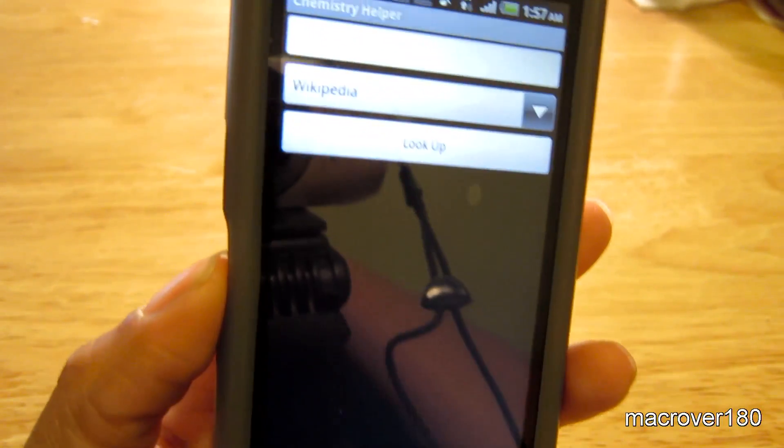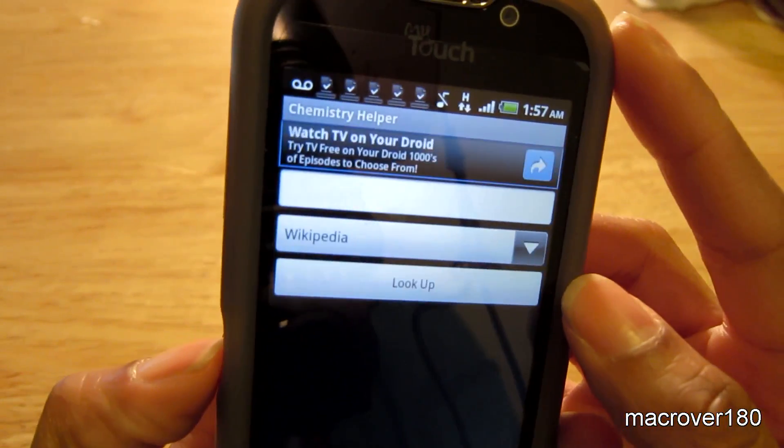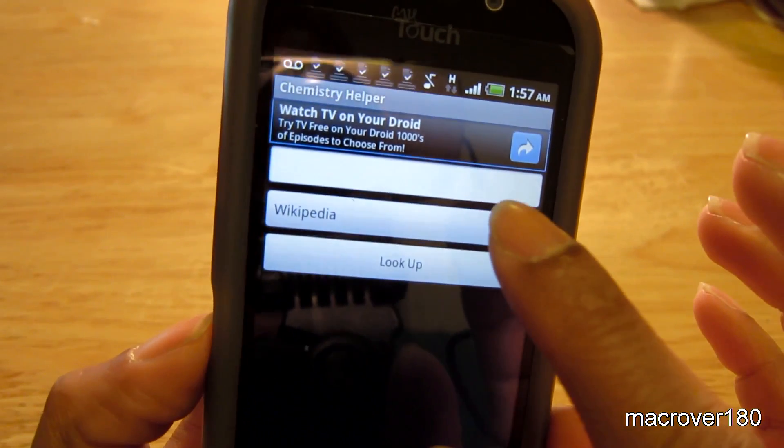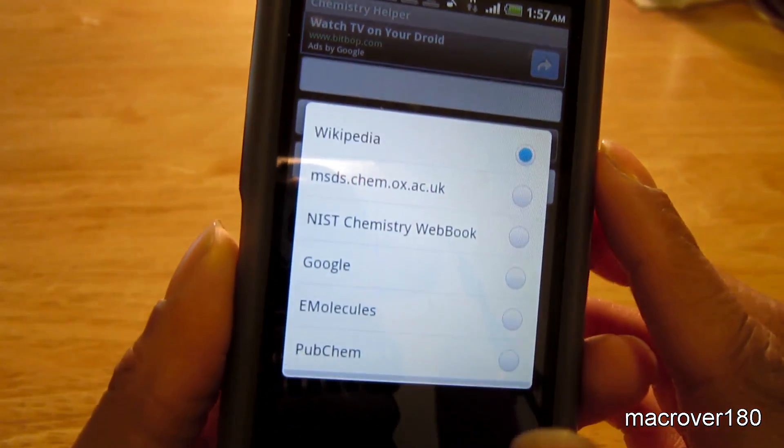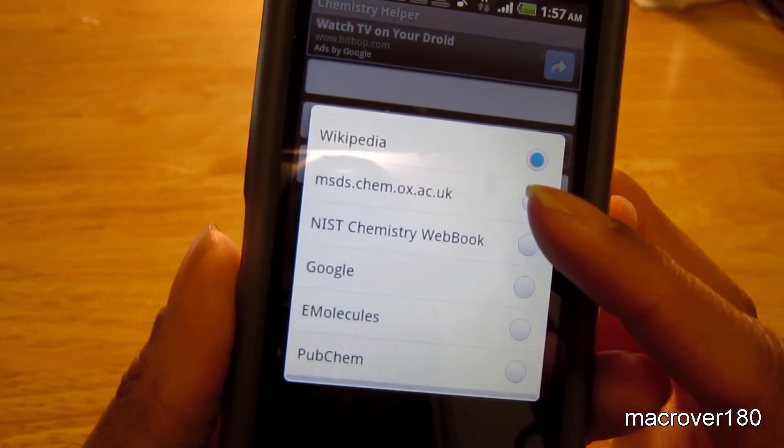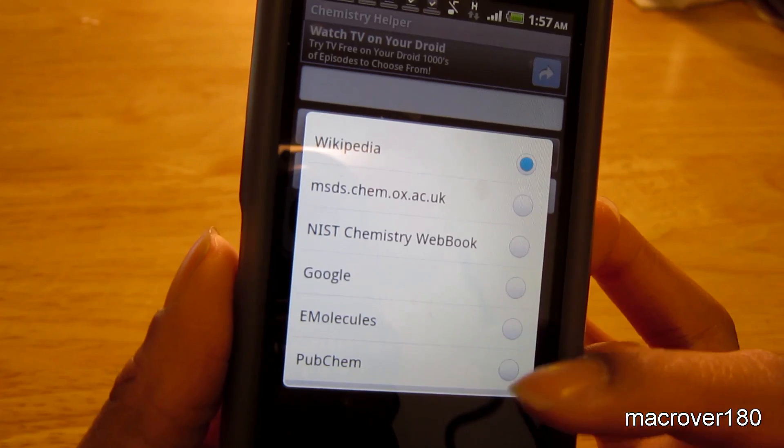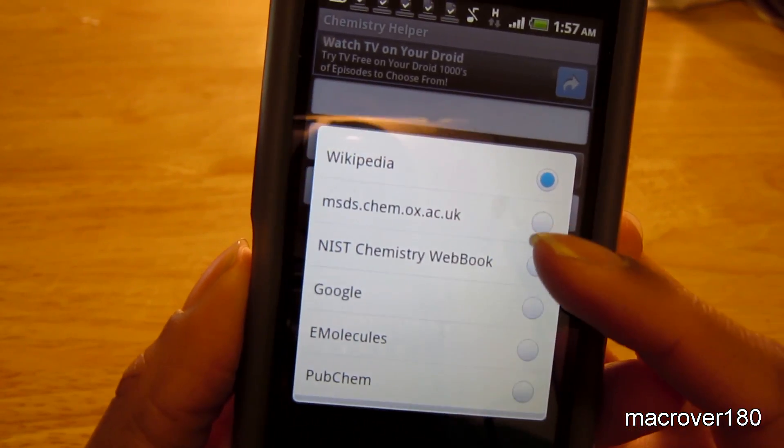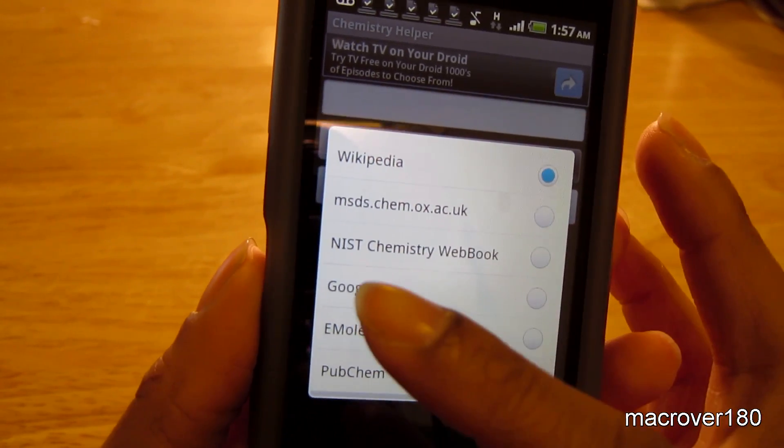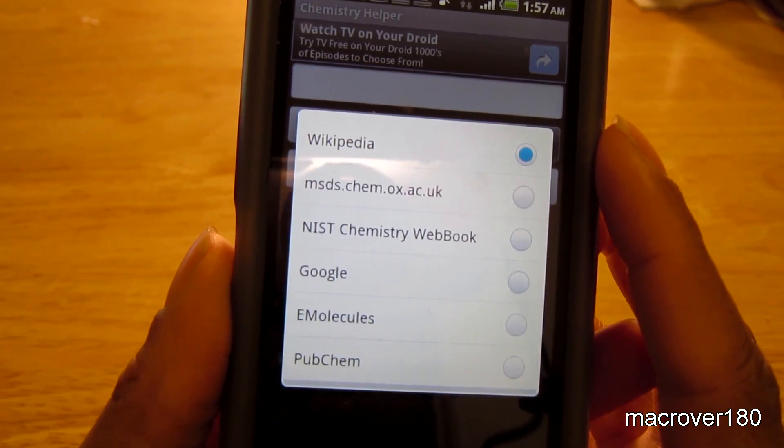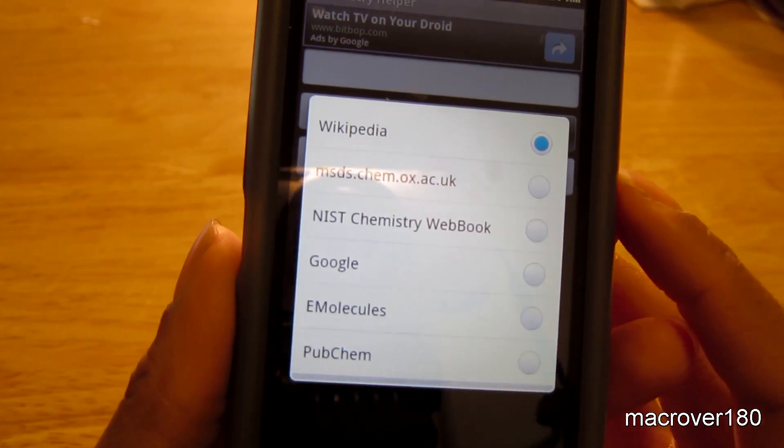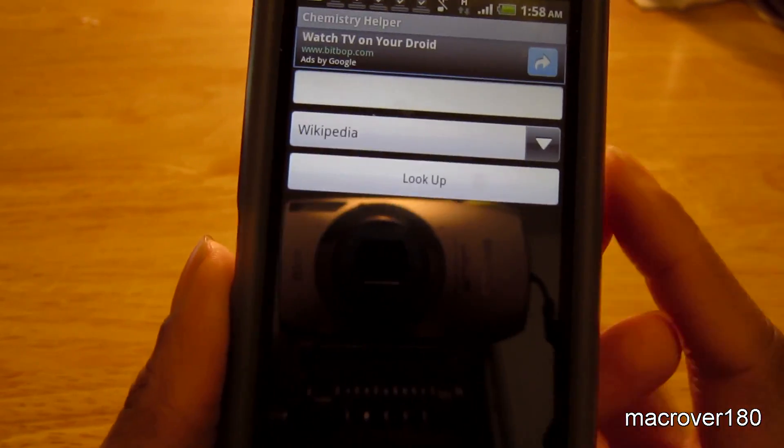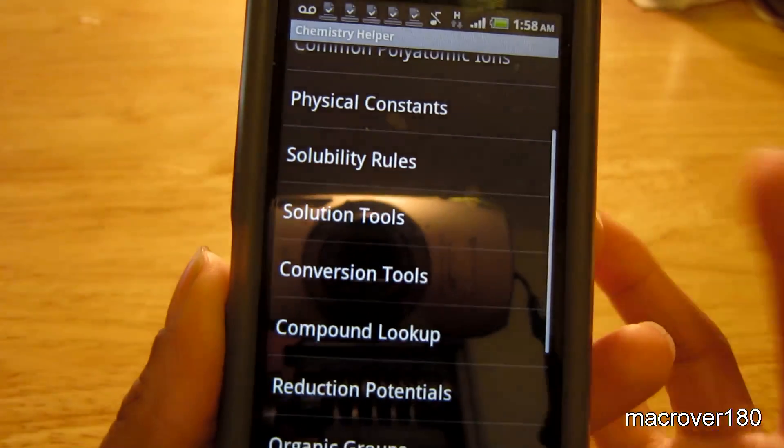Compound lookup. You can look up the compound. You can use Wikipedia, or you can check other sources. NIST chemistry web book, you can use Google, e-molecules, PubChem. So that's just fantastic.